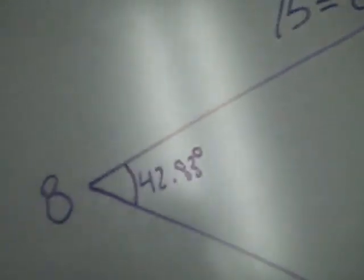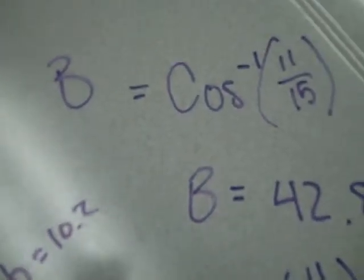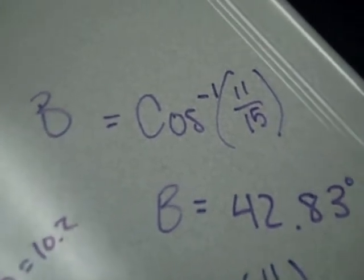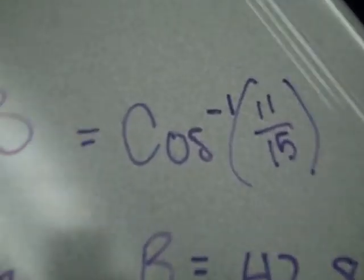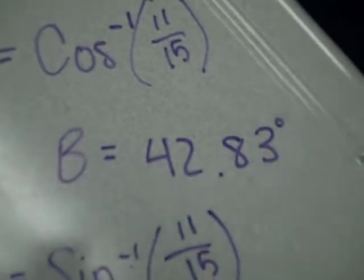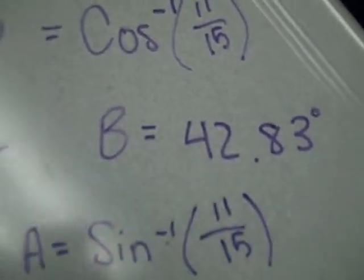From here we took the inverse cosine of B, which is 11 over 15, side A over side C, and we found 42.83 as the angle for B.